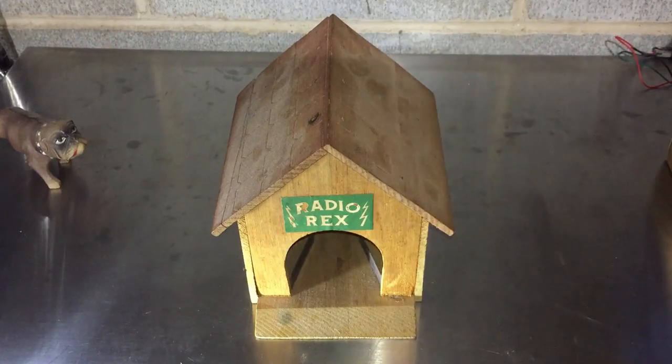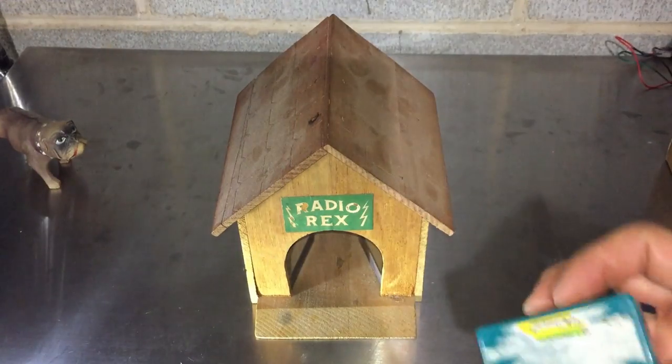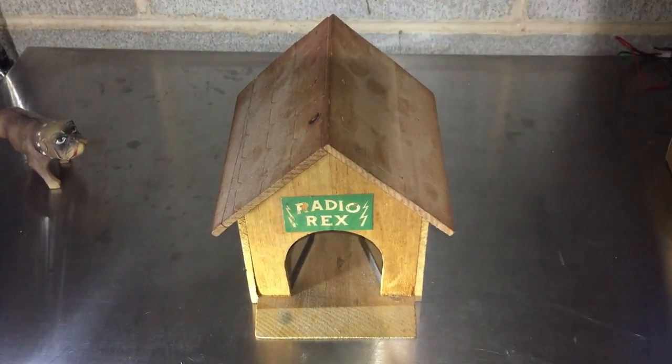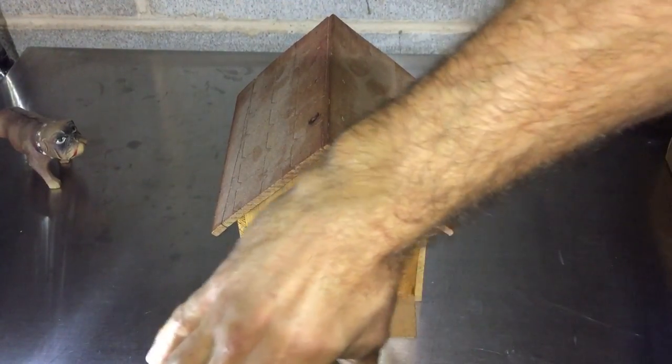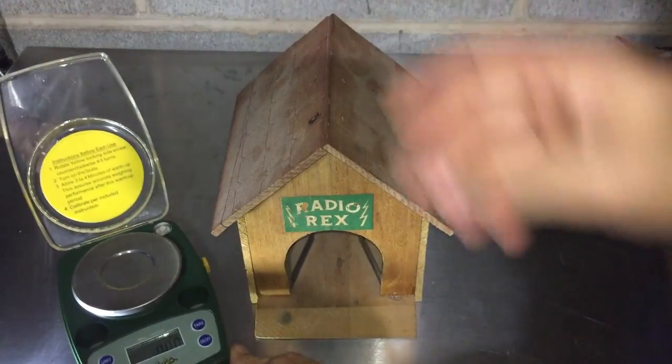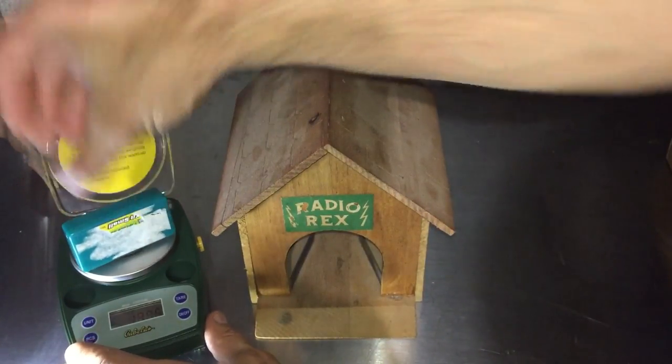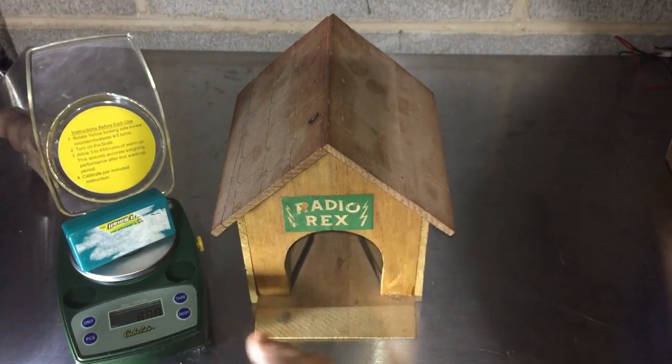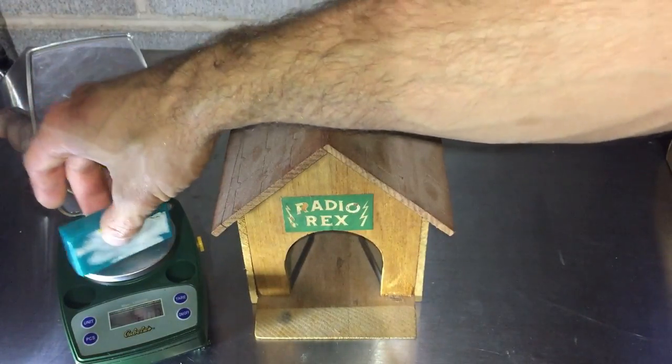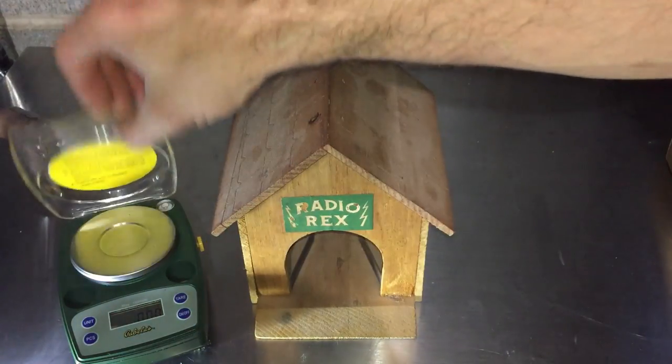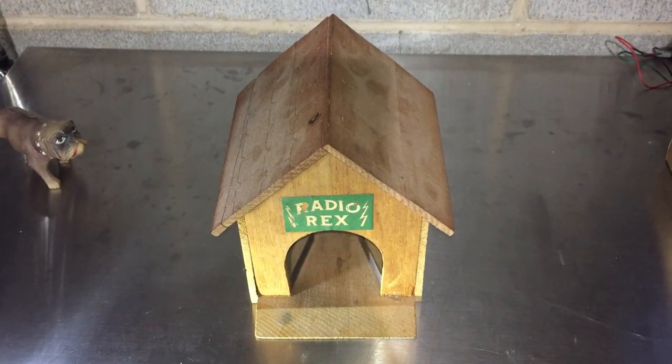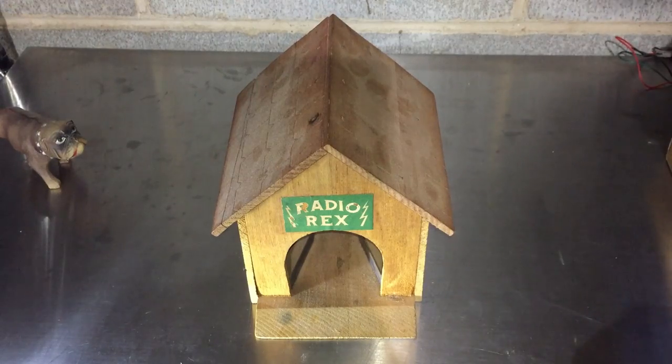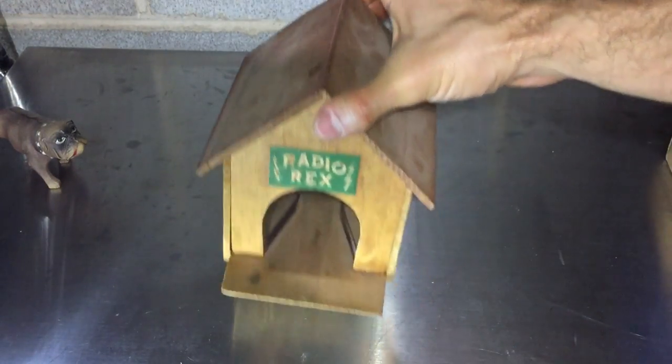So what I have instead of Rex is I have a very lightweight box. Now last time I used this thing I never used a 3D printer, but now I've used them a lot. This weighs 8 grams, which Rex weighs 9 grams, so it's basically the same weight. If you put something too heavy in there, Rex won't come out because the actuator is pretty weak.